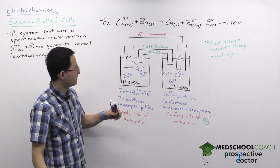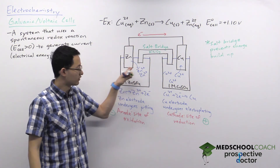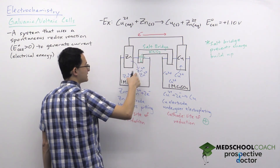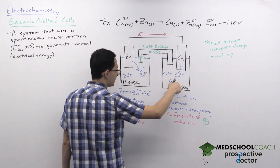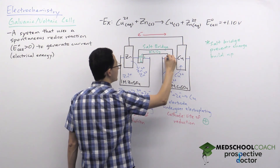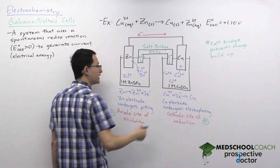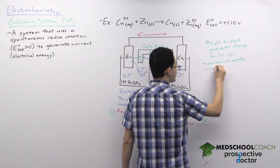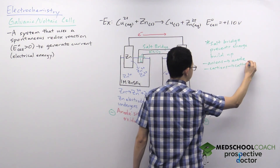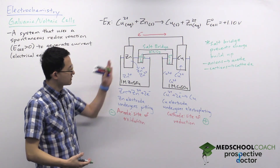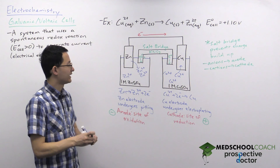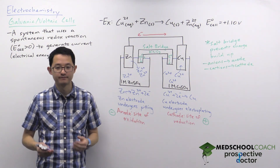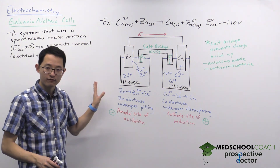Here's how the salt bridge prevents charge buildup: the zinc solution is becoming too positive (too many cations), so the nitrate anions from the salt bridge enter the zinc solution. The copper solution is becoming too negative, so the potassium cations from the salt bridge enter the copper solution. A nice way to remember this: anions in the salt bridge go to the anode, cations go to the cathode. With this, we have a complete circuit producing lots of current, which can power electrical devices like light bulbs — and that is how a galvanic cell works.